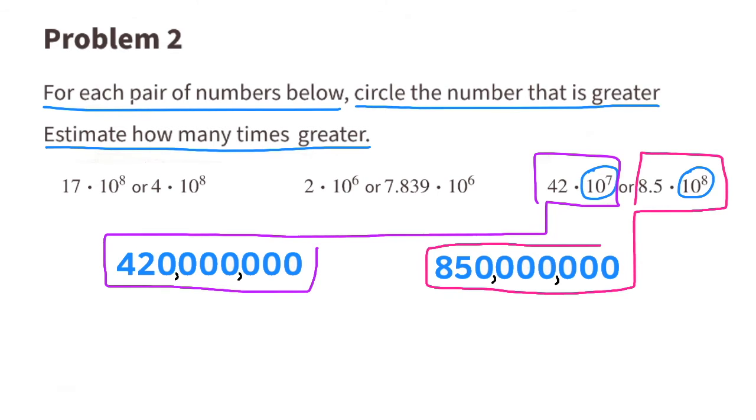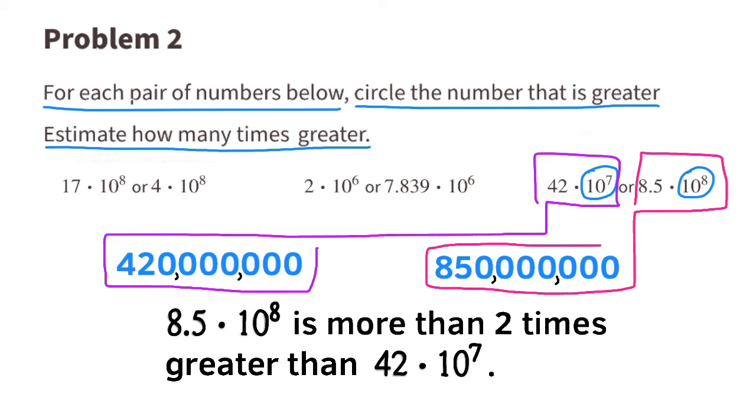Let's put the commas in. Since 850,000,000 is more than 2 times greater than 420,000,000, then 8.5 times 10 to the power of 8 is more than 2 times greater than 42 times 10 to the power of 7.